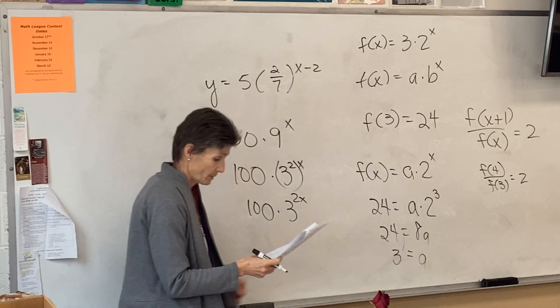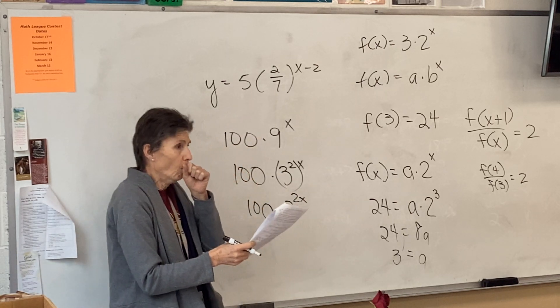Okay, so I have 100 times 9 to the x. And I want to know, is that the same as... I think I'm going to go ahead and simplify that a little bit and see if I can figure it out from there. So 9 is 3 squared. So that would be 100 times 3 to the 2x. Is that option c? Yeah. So it is c.